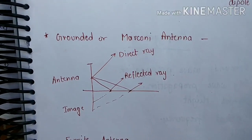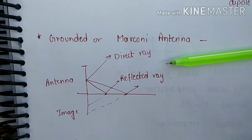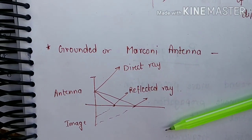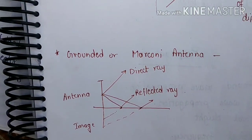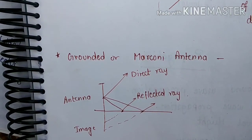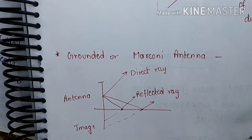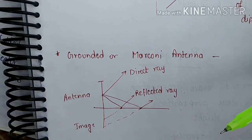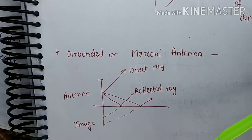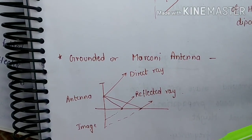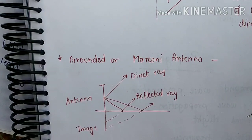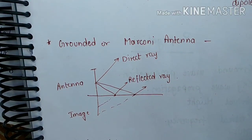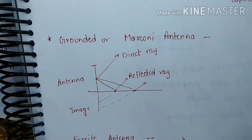Next, we look at the grounded or Marconi antenna. If any antenna is placed in front of the ground, the ground acts as a reflecting plane. If there is any antenna placed above the ground, the ground forms a mirror image of the antenna, and the radiation pattern behaves accordingly.